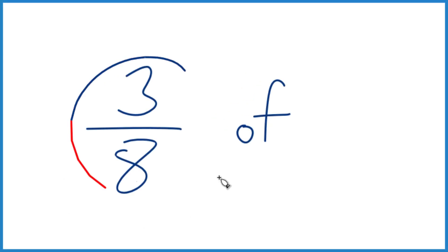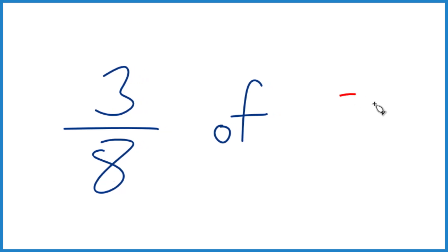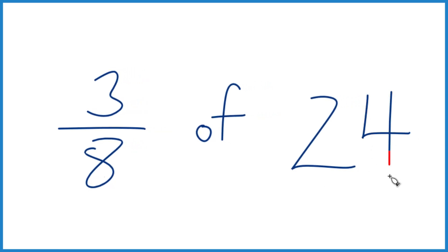So if you need to find 3 8ths of a number, let's say any number, but how about 24? How do you do that? Well, first off, that of, let's call that multiplication.